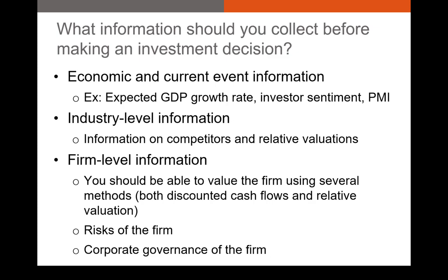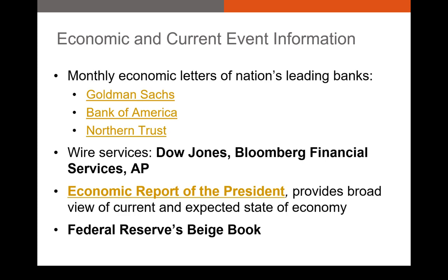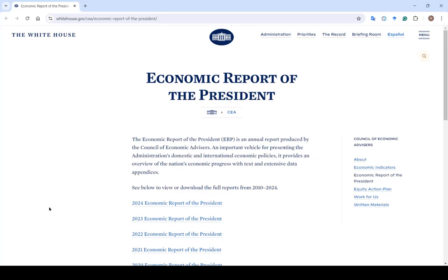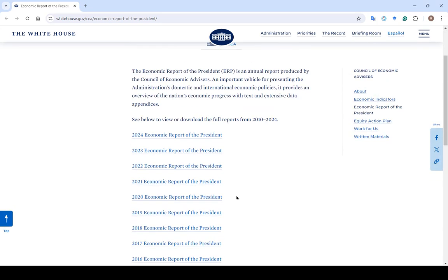Now let's talk about the sources of this information. We'll start with the macro level information. You can get information about current and expected future economic conditions from things like economic letters posted by large cap banks, such as Bank of America or Goldman Sachs. You can also get macro information from sources like news wires or even the economic report of the president. If I pull up the economic report of the president, you can see we have the 2024, 2023, 2022 — basically every economic report of the president.